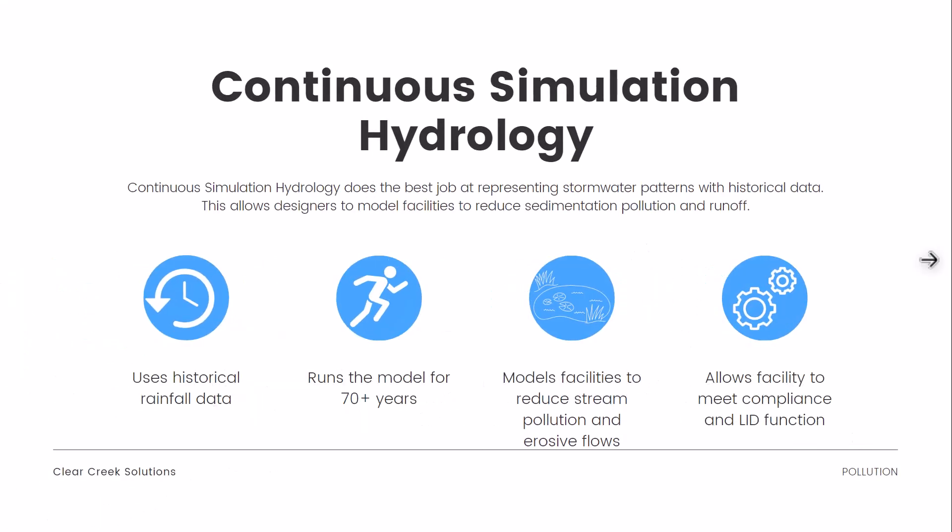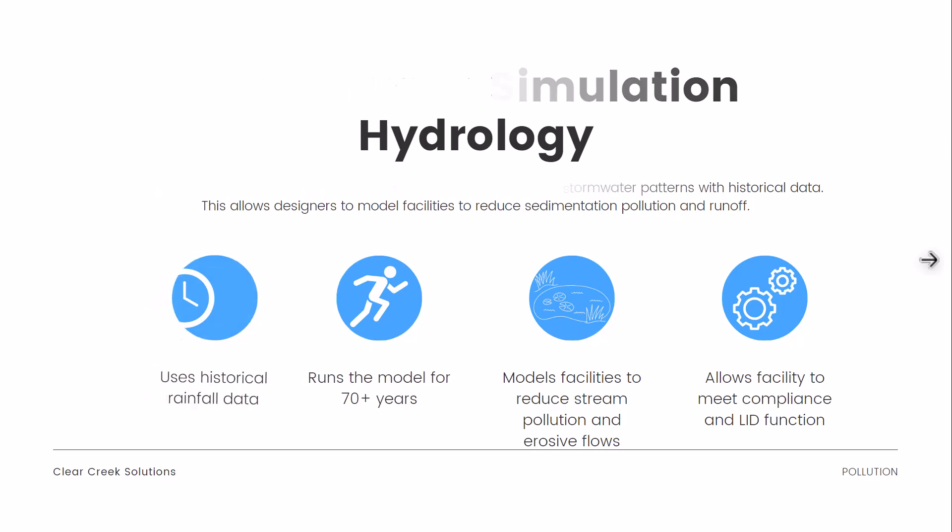So what is continuous simulation hydrology? Continuous simulation hydrology does the best job at representing stormwater patterns with historical data — we have videos on that on our channel as well. This allows designers to model facilities to reduce sedimentation, pollution, and runoff. Continuous simulation uses actual historical rainfall data, not synthetic data, and runs the model for 70-plus years of historical data. We then model the facilities to reduce stream pollution and erosive flows, allowing the facility to meet local compliance and LID function in your jurisdiction.